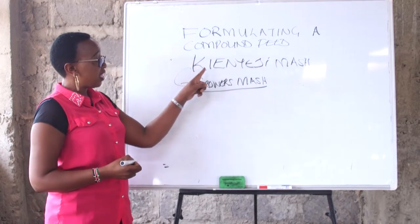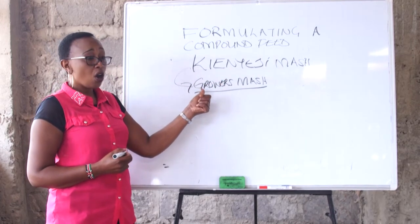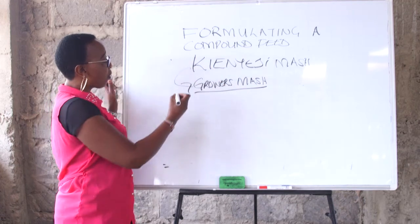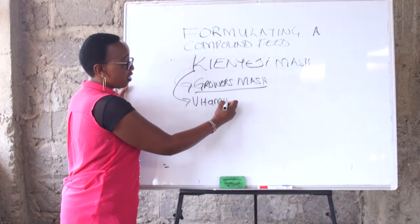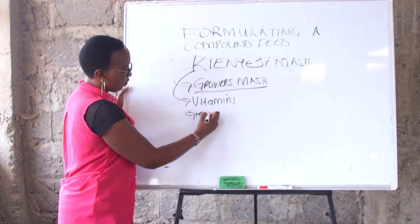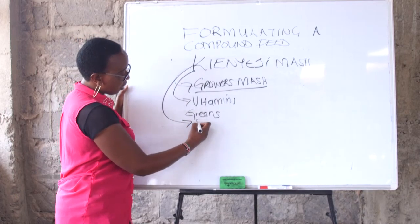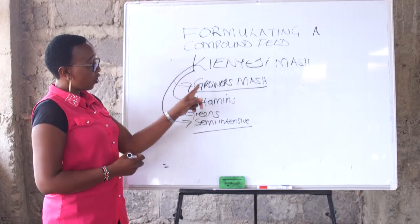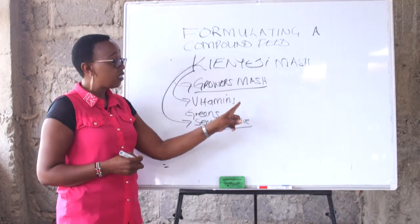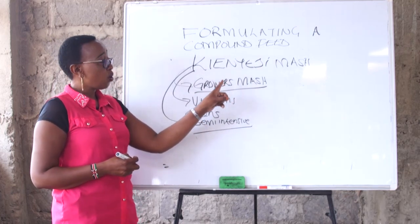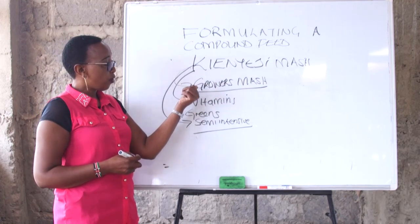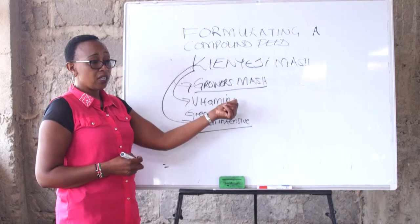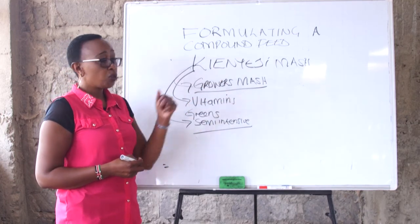We consider the kianyeji mash to be equivalent to the grower's mash nutritionally, because this bird is supplemented a lot. Farmers are able to do supplementation by provision of vitamins — not in the synthetic form, but from the greens. Normally these birds are on semi-intensive systems, so they are freely moving around. When I do the kianyeji mash, I equivalent it to the grower's mash and I don't go wrong. If the farmer is able to supplement the provision of protein and vitamins, so the other 2% is achieved that way.